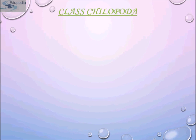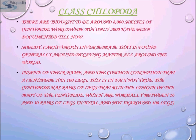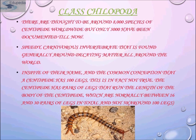Class Chilopoda includes centipedes. The centipede is a speedy, carnivorous invertebrate found around decaying matter all around the world. The bite of the centipede contains venom, which means the centipede kills its prey before eating it. Despite their name, the common conception is that centipedes have a hundred legs — 'cent' means hundred and 'pede' means legs. However, this is not actually true.